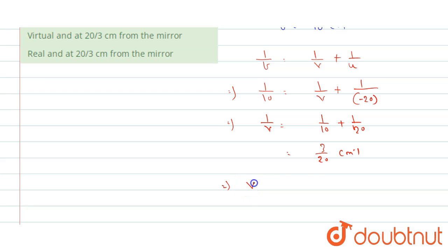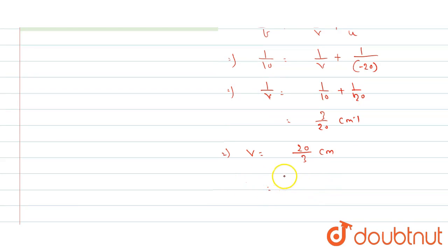That implies image distance will be 20 divided by 3 centimeter. And 20 divided by 3 is 6.67 centimeter.